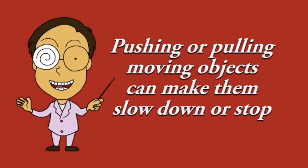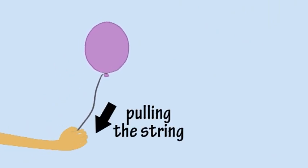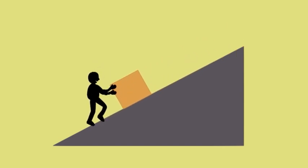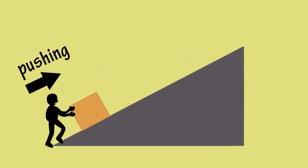Pushing or pulling things can also make moving objects slow down or stop. For example, pulling on the string stops the balloon floating away, and pushing up against the box as it slides downhill slows it down.